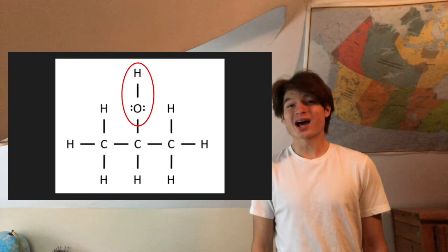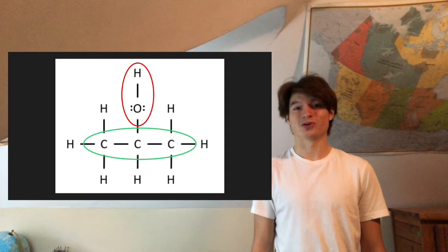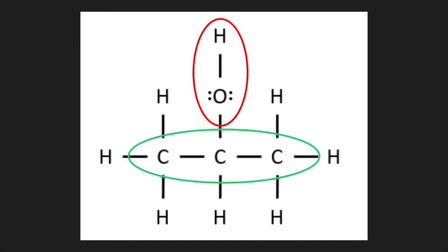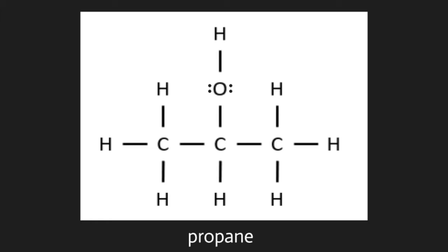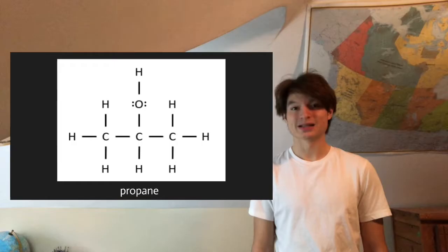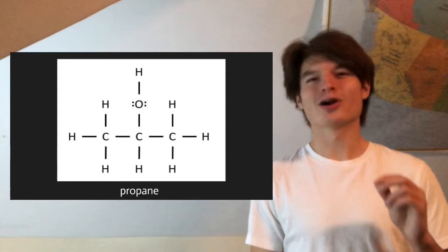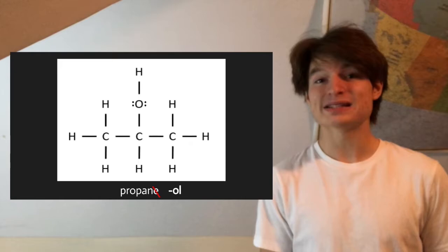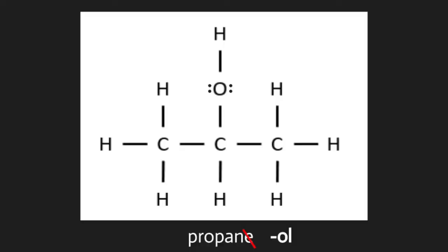Now like other organic molecules, we're going to start by identifying the longest chain of carbons in this molecule, and then choosing an appropriate root. In this case we have three carbons in the longest chain, so we're going to choose the root PROP. We then add the -ANE ending because we have only single bonds present, leaving us with propane. The key part in naming an alcohol is we take off the E at the end of the name and replace it with -OL. Think of the word alcohol — it ends with that -OL ending — and so that leaves us with propanol.